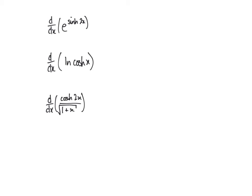Here are three final examples involving exponentials, logs, and quotients. The first one: when we differentiate an exponential, it stays the same. So differentiating e to the power of sinh 2x stays as e to the power of sinh 2x, but we multiply through by the differential of sinh 2x, which is 2 cosh 2x.